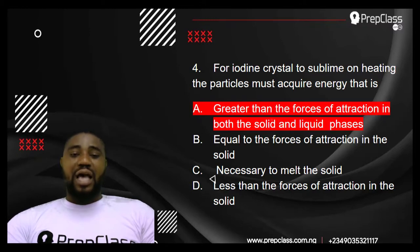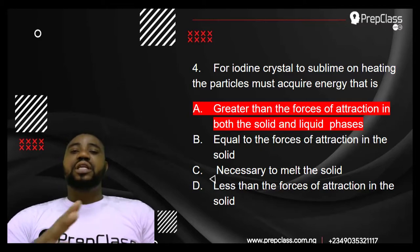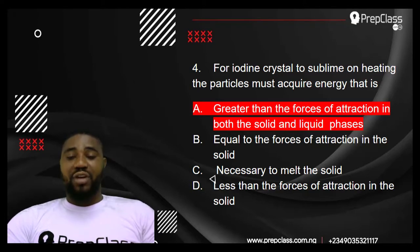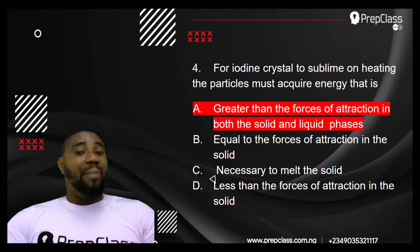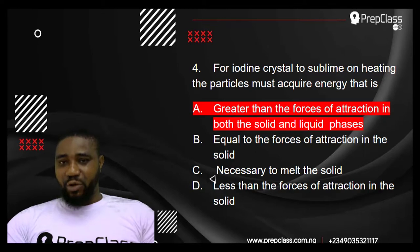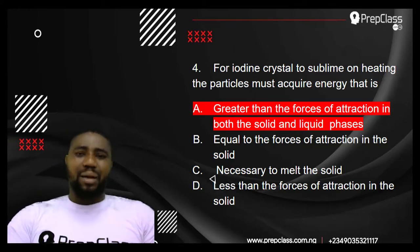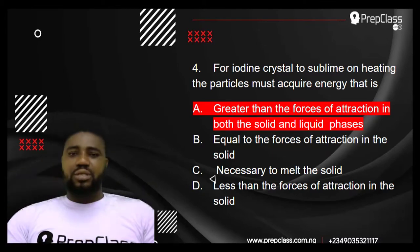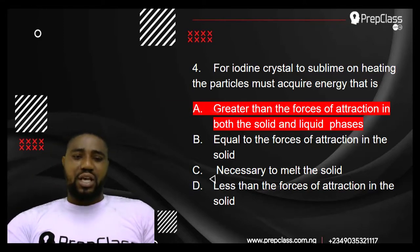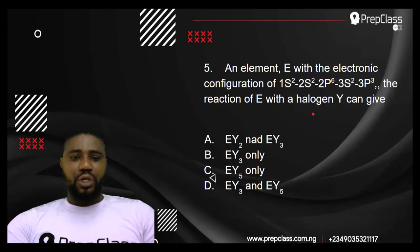The answer is that it must absorb energy greater than the forces of attraction in both the solid and the liquid phase. In the solid phase, particles are held by strong intermolecular cohesive forces and cannot move. In the liquid phase, the intermolecular forces are weaker, so particles can move to some extent. To sublime directly into the gaseous phase, the energy must overcome both these forces so the particles can move randomly without restriction.